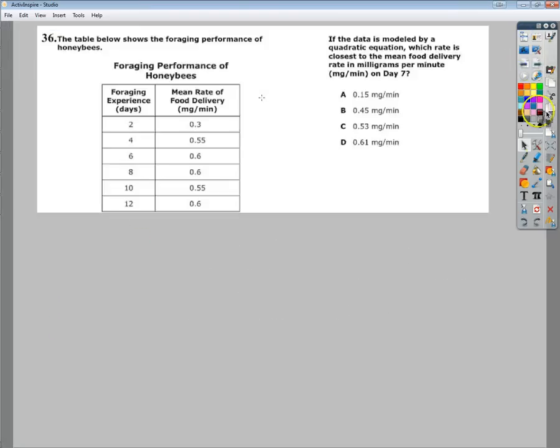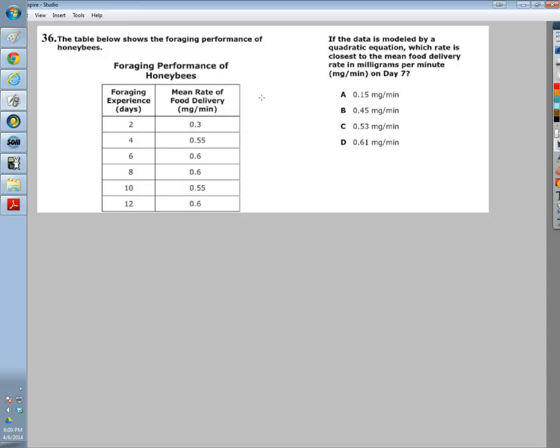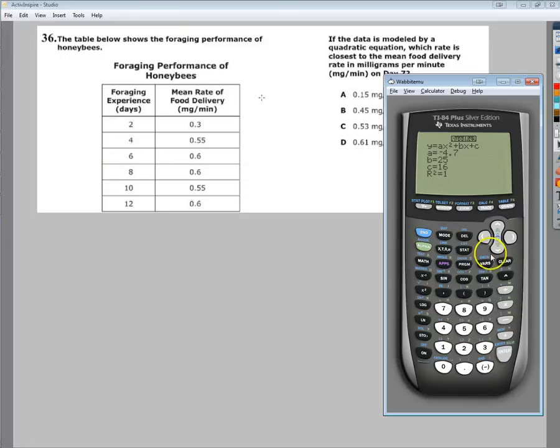One that I pulled from an end-of-course test for Tennessee. In this case, they say if the data is modeled by a quadratic equation, so they're telling you what type of regression they want. So go into your stat menu, edit it out, and punch in all your stuff. I'm going to delete some things to make it look cleaner. I have to be careful to read the whole thing. It tells me that one is the number of days of foraging, and the second is the mean rate of food delivery. Which rate is closest to the mean food delivery in milligrams per minute on day 7?